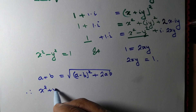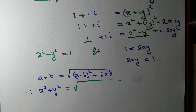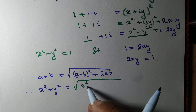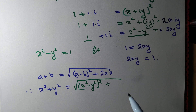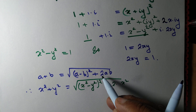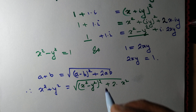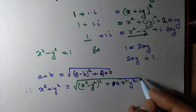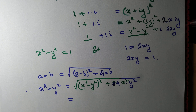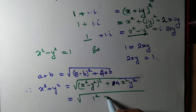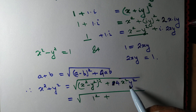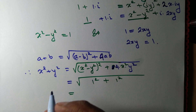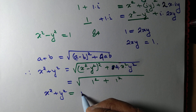Taking a = x² and b = y², we get x² + y² = √((x² - y²)² + 4x²y²). We know x² - y² = 1, so that term gives 1². And 2xy = 1, so (2xy)² = 1. Therefore x² + y² = √(1 + 1) = √2.